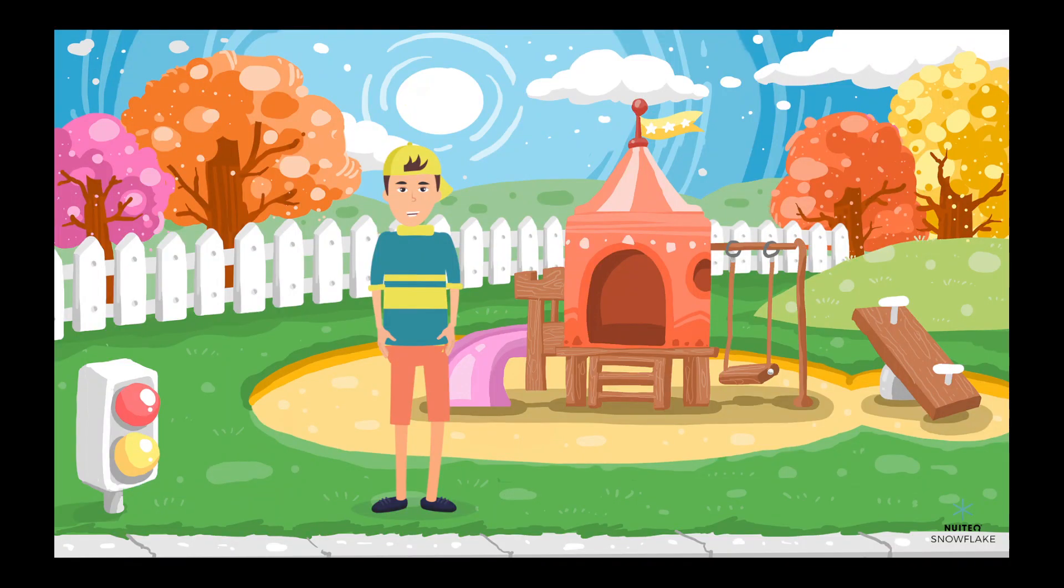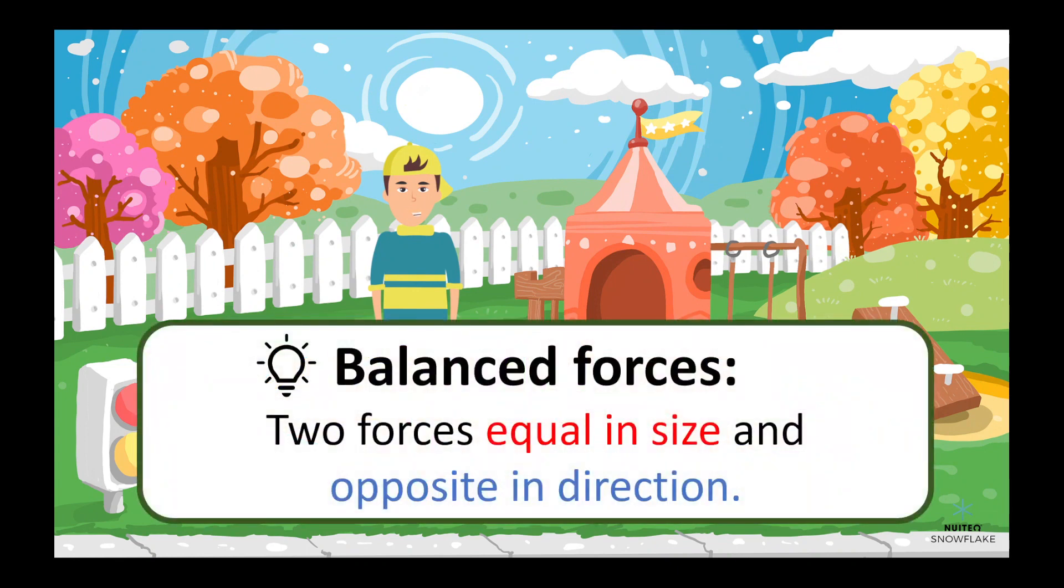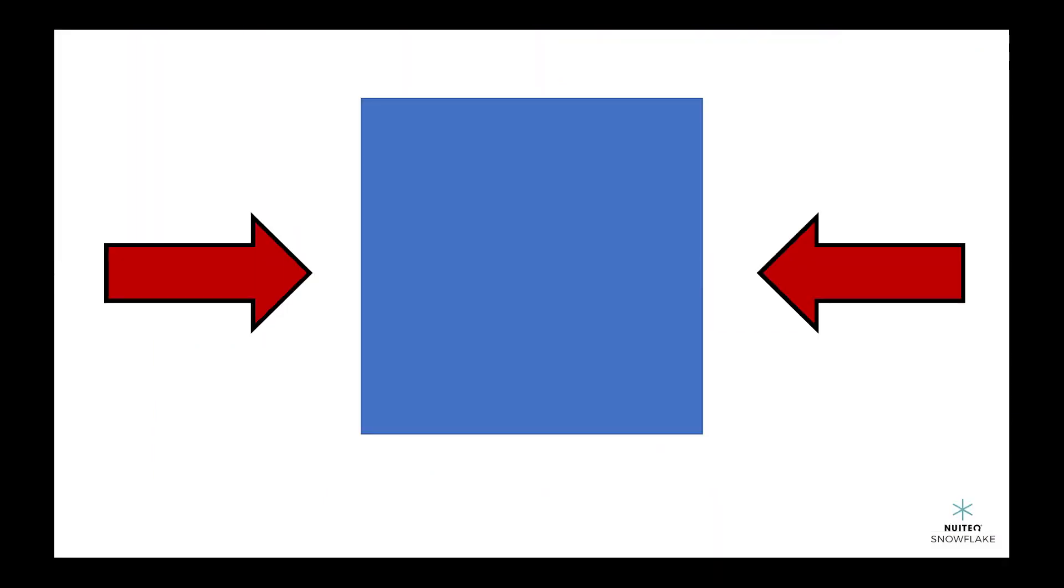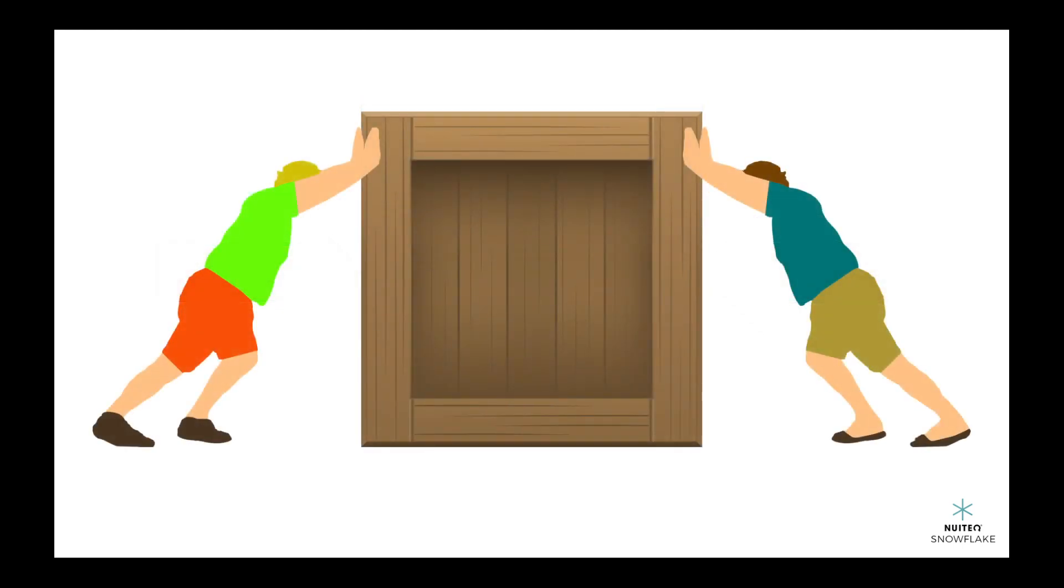Now, let's talk about balanced forces. Balanced forces are when two forces are equal in size and opposite in direction. This means that the forces cancel each other out, and the object doesn't move. It's like when you and your friend are pushing a box from opposite sides with the same amount of strength, and the box doesn't move. That's balanced forces.